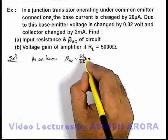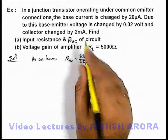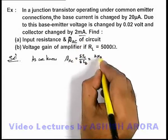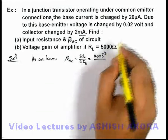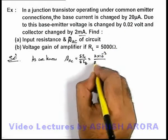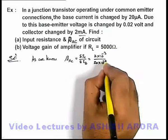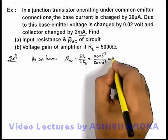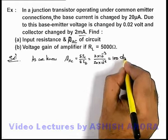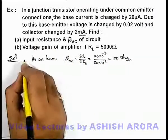Here delta I_C we are given with 2 milliampere, so we can write it as 2 × 10^-3, and base current we are given that it is changed by 20 microampere, so this is 20 × 10^-6. On calculation, it'll directly give us the value 100 for beta AC. That is the answer to part A of this problem.